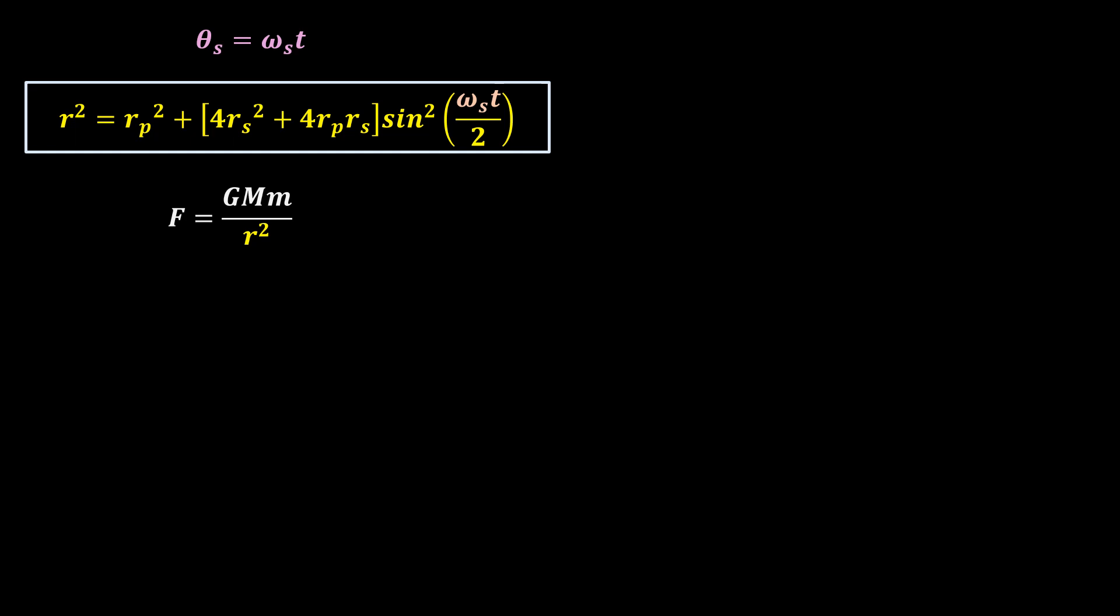For all our day-to-day objects and experiments on Earth, theta s and theta p are both zero because the objects are static. That is why this form of Newton's equation works so well. But in the scale of the cosmos, a small rotation can make a very big difference.